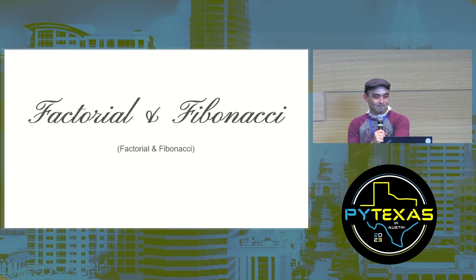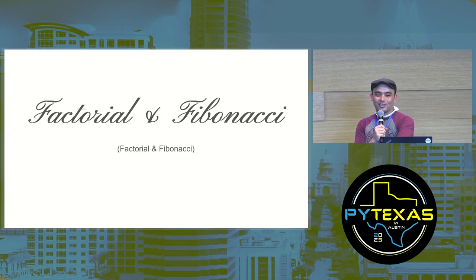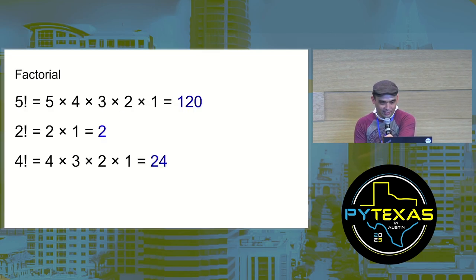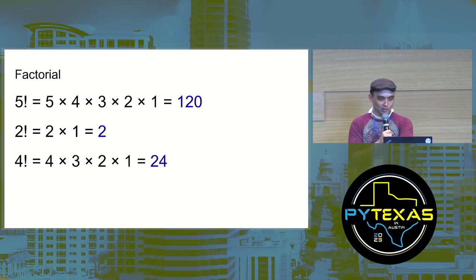I think it's really telling that there are two algorithms every recursion tutorial uses, and they are both terrible examples of recursion: the classic algorithms factorial and Fibonacci. So, factorial is a math thing — five factorial is five times four times three times two times one, which equals 120.